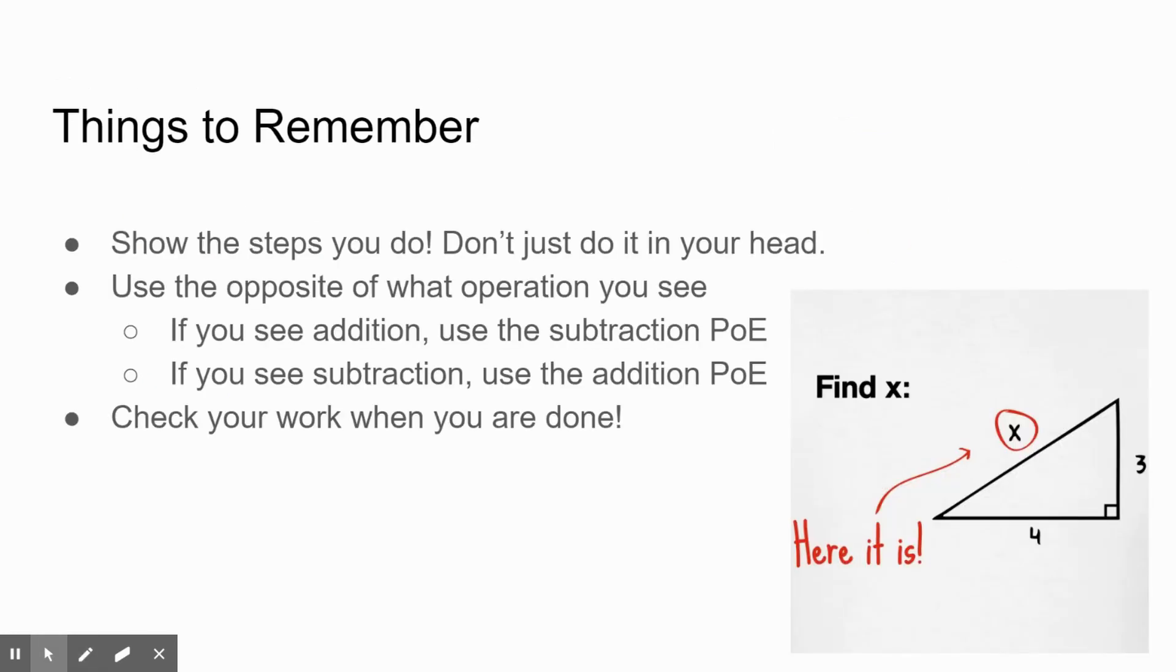Things to remember from this video: show all the steps you do, don't just do it in your head. Sometimes you can, but again, it's going to be better practice and better in the long run if you do show every single step, especially when we're starting this out because you might make a mistake and then you know where you messed up your thinking. Use the opposite of whatever operation you see. If you see addition, you're going to use the subtraction property of equality. If you see subtraction, you're going to use the addition property of equality. You want to basically undo the operation that is originally in your equation. Finally, check your work when you're done.